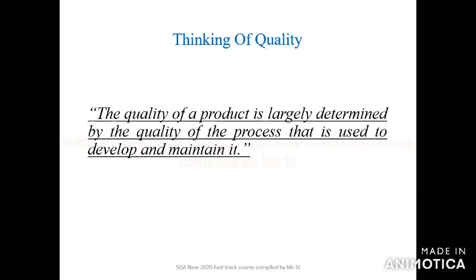Thinking of quality definition: the quality of a product is largely defined by the quality of the process that is used to develop and maintain it. As we normally say — when we look at a product, we look at the standards. The standards are applied; this is a brand. Every step of a particular process is applied standard-wise. When it is applied standard-wise and everything is applied in the right time, in the correct way, it means that quality is fulfilled.